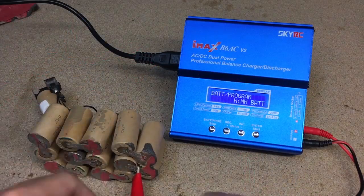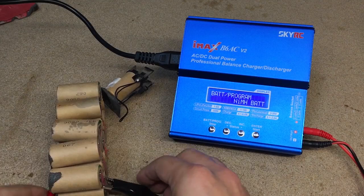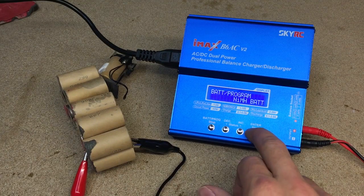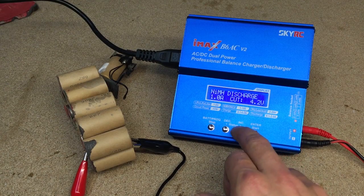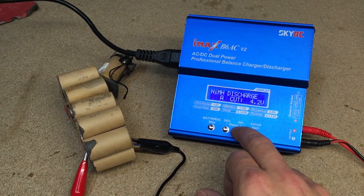Before beginning the repair process, I used my IMAX B6 charger to discharge three randomly picked cells at 2 amps of load and 1 volt cutoff voltage, because at 1 volt the cell will be almost empty.